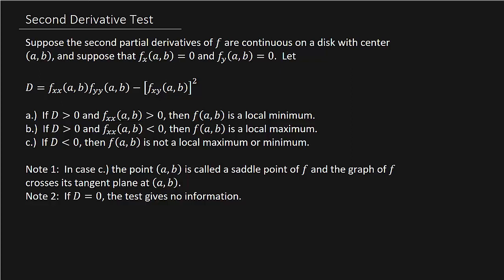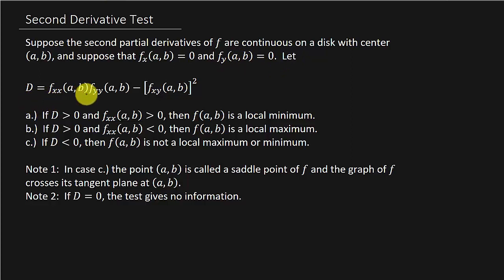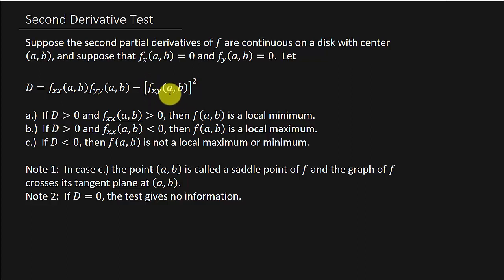...the partial of f with respect to x and the partial of f with respect to y, evaluated at ab, are both equal to zero. Let D equal the second partial of f with respect to x times the second partial with respect to y — both evaluated at ab — minus the mixed partial of f with respect to x then y, squared. That's what D equals.